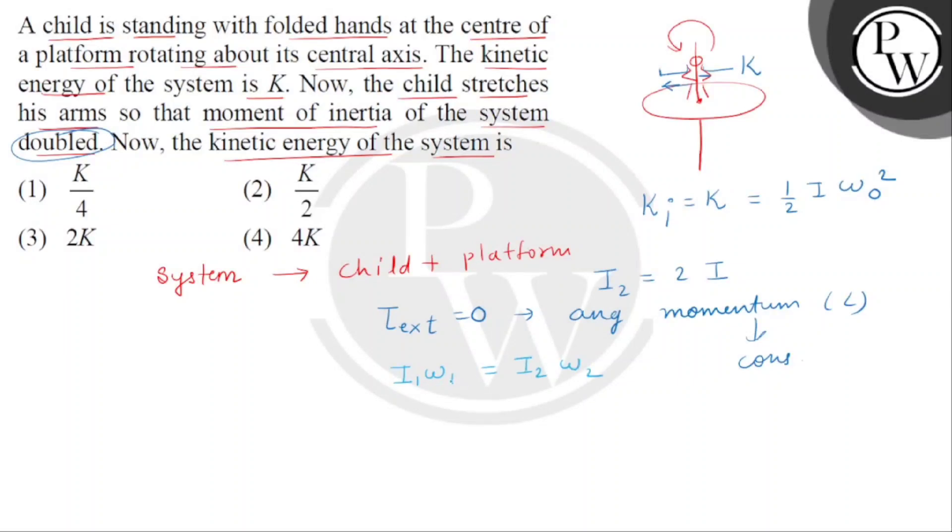We have to consider omega naught and moment of inertia in the first case is I. So I omega naught equals to 2I because it becomes double multiplied by omega 2. So the angular frequency will be half as compared to the previous angular frequency. So now we have to find what is the new kinetic energy of the system.